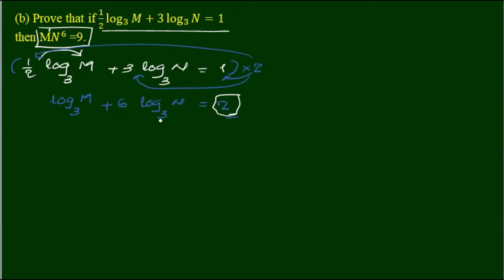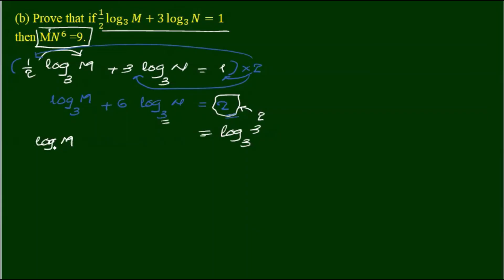Now if we use 2 to log 3, log 3, log 2 — you can use 2 to log in. 2 is equal to 2. If you have 2, you can see that 3 base 3 is equal to 2. 2 is equal to 3. Log m base 3 plus 6, log n power 6 base 3.